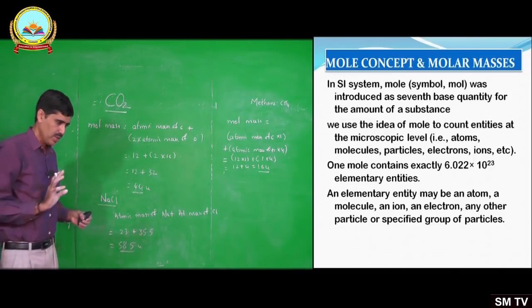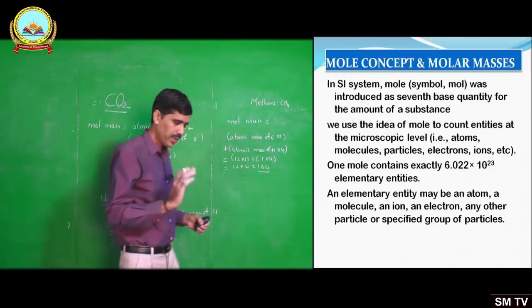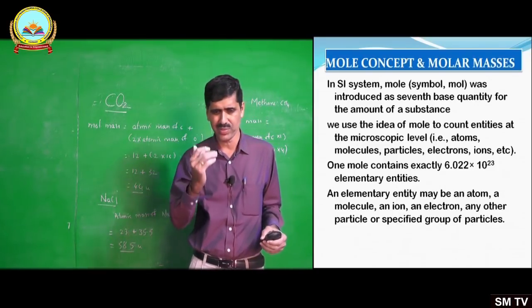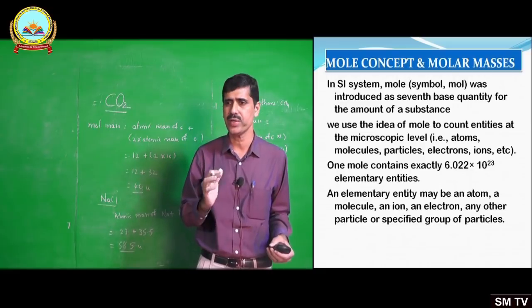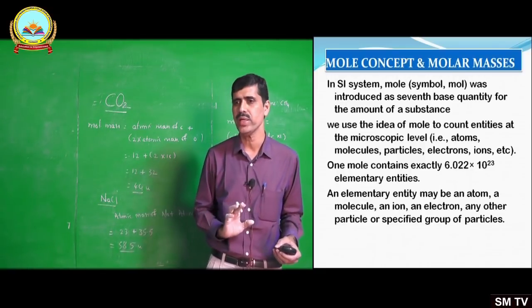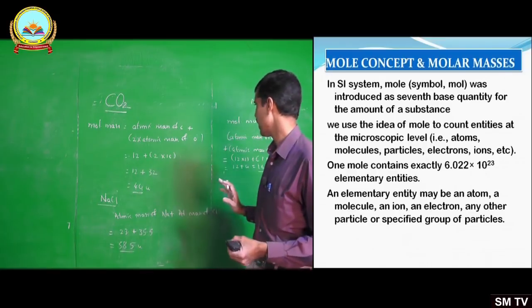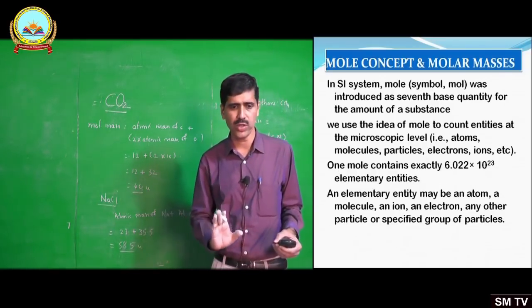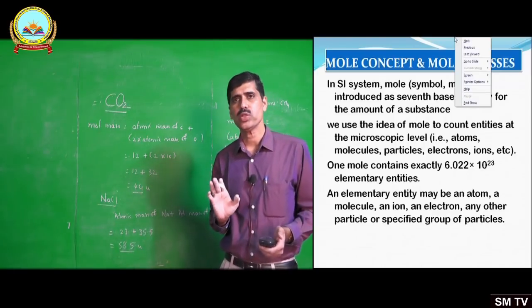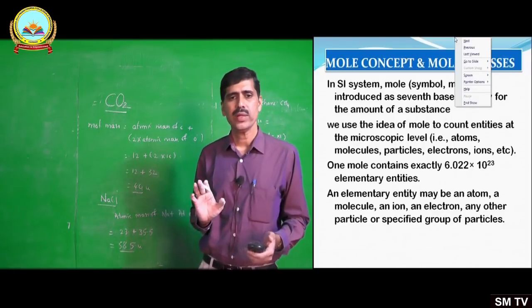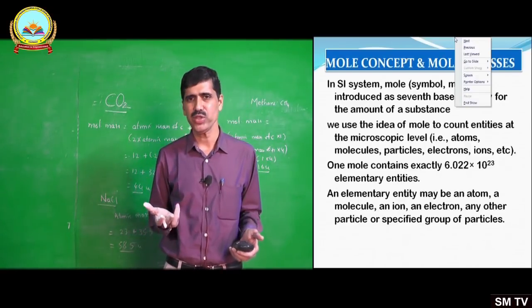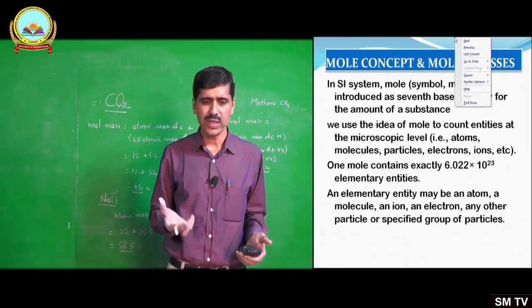Formula mass for NaCl is nothing but its molecular mass calculated using the formula. Formula mass of NaCl = atomic mass of sodium + atomic mass of chlorine. Atomic mass of sodium is 23, and atomic mass of Cl is taken as 35.5 — based on the abundance of its two different chlorine isotopes. The total formula mass of NaCl is 58.5 U (unified mass).